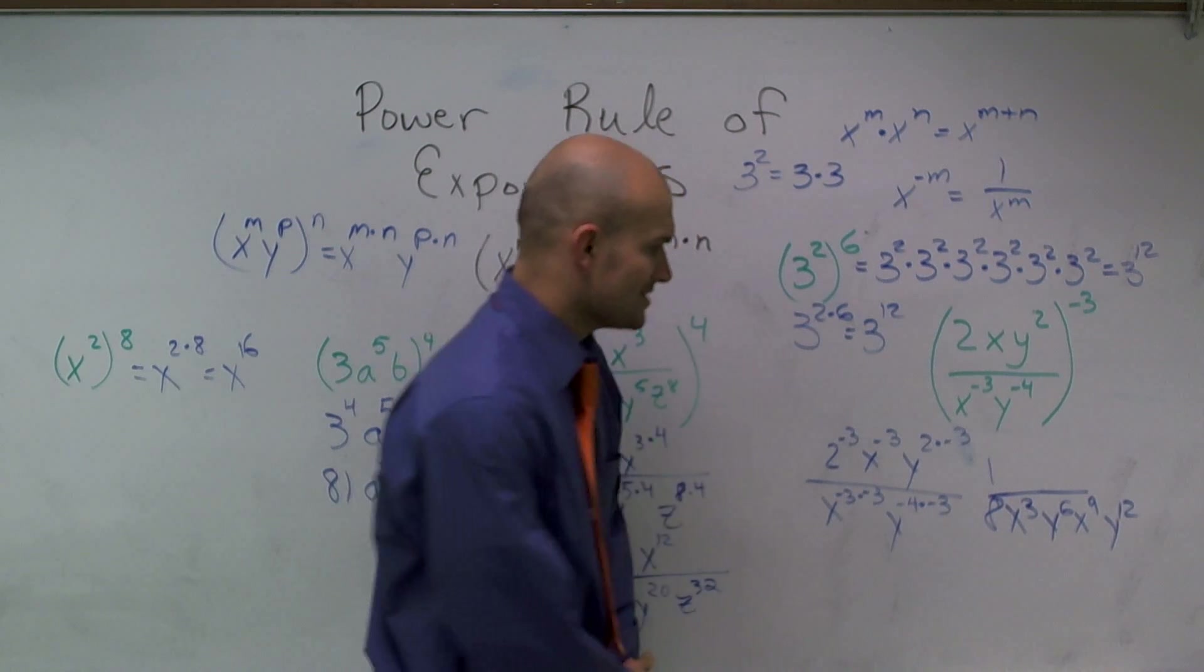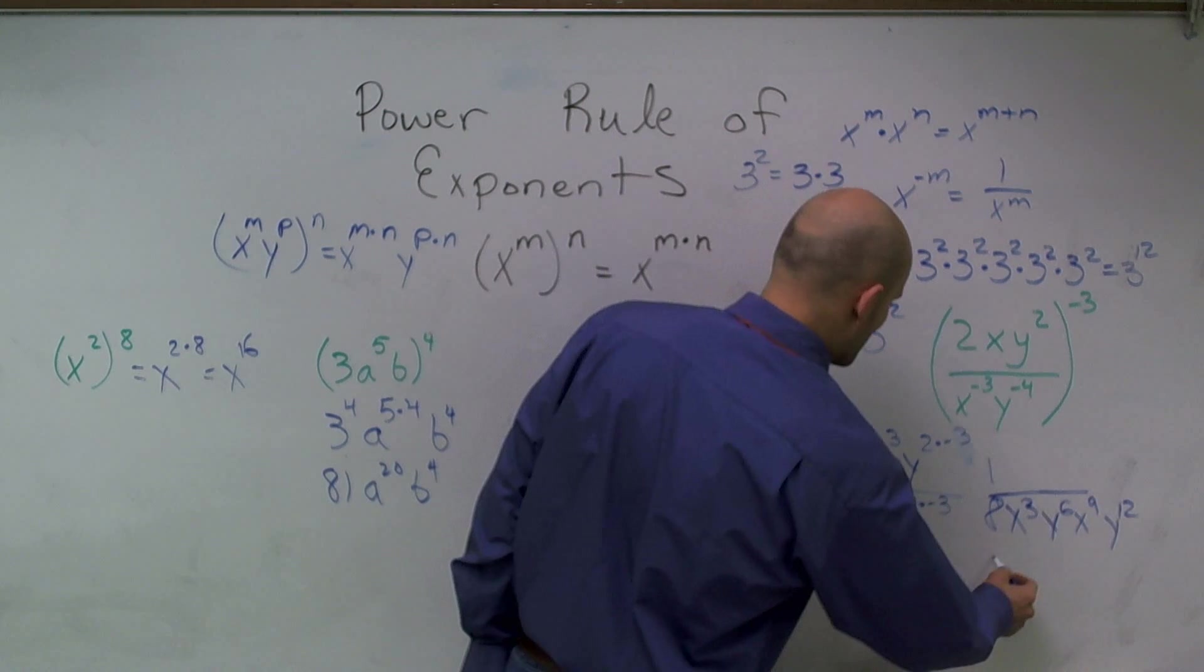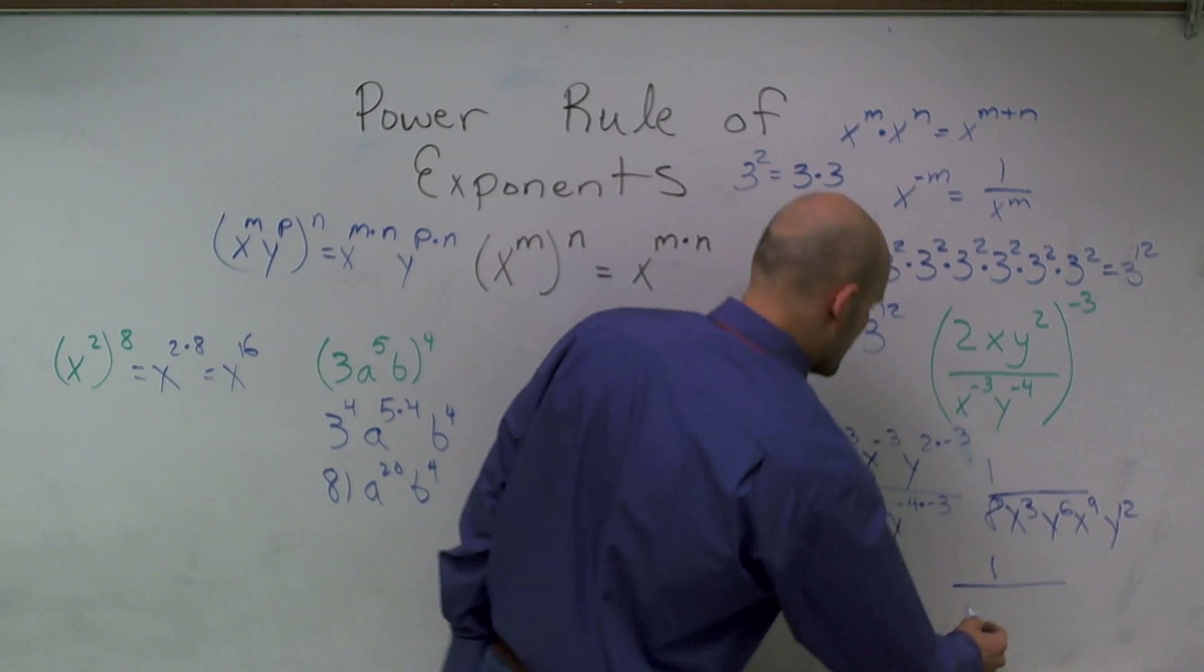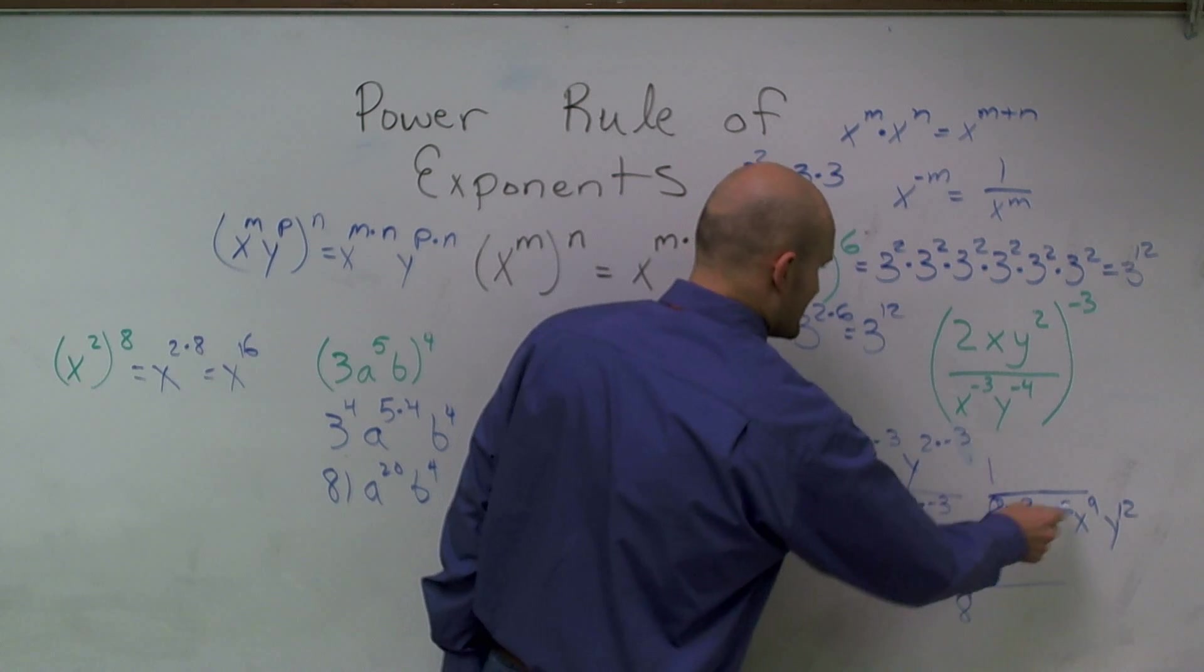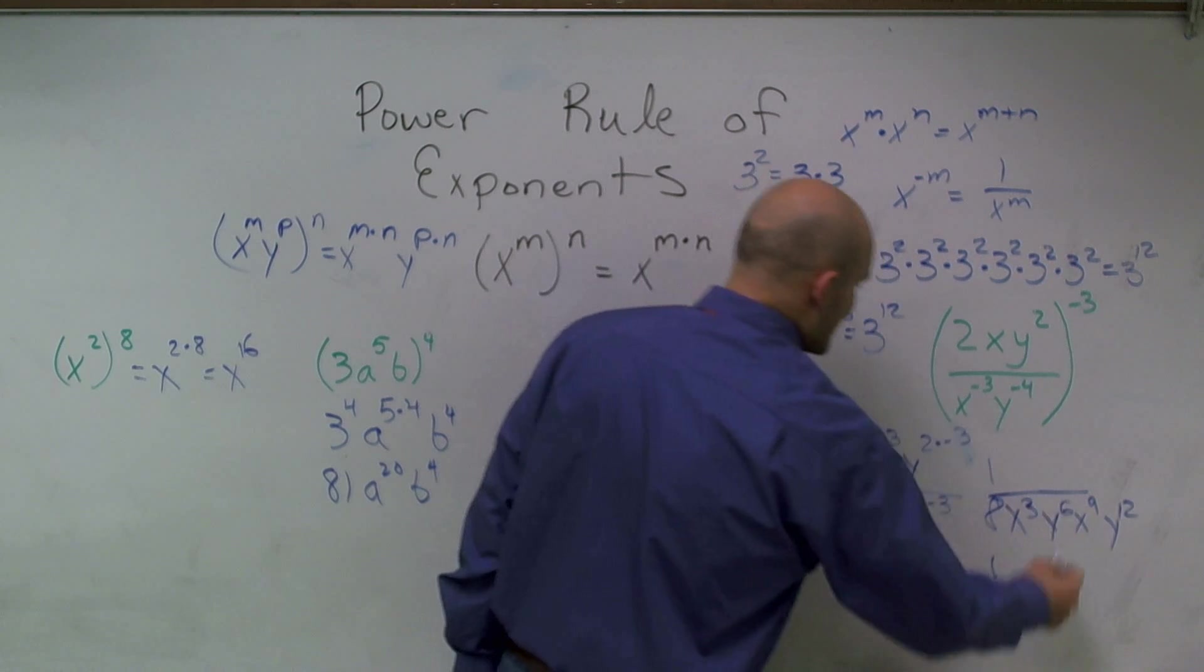If you guys look at this, now I have these exponents are multiplied, and I can actually add them. So this is all 1 over 8 times x 3 times 9, which is x to the 12th, y to the 18th.